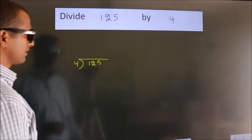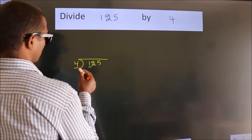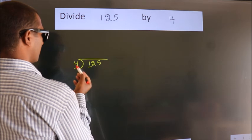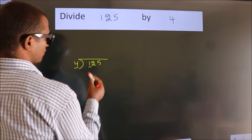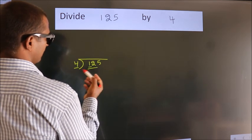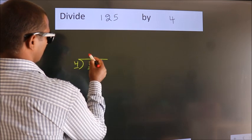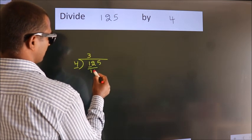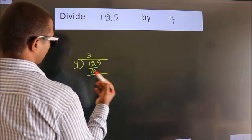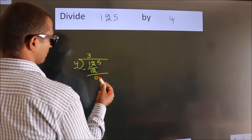Next. Here we have 1, here 4. 1 is smaller than 4, so we should take 2 numbers, 12. When do we get 12 in the 4 table? 4 threes, 12. Now we should subtract. We get 0.